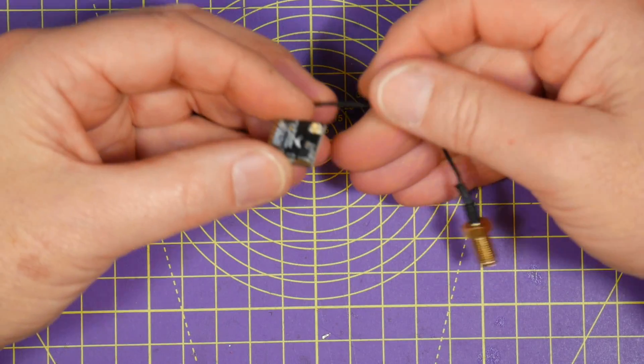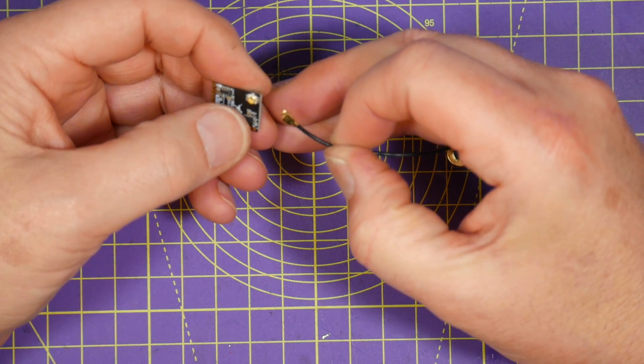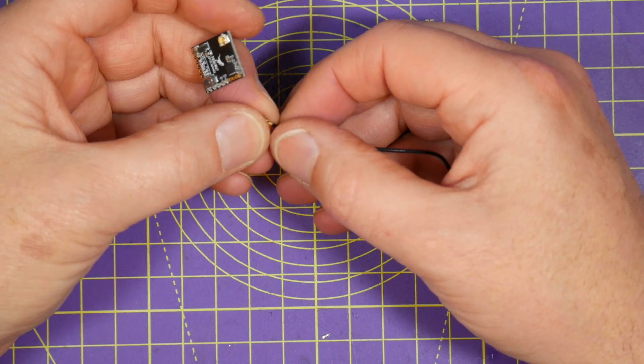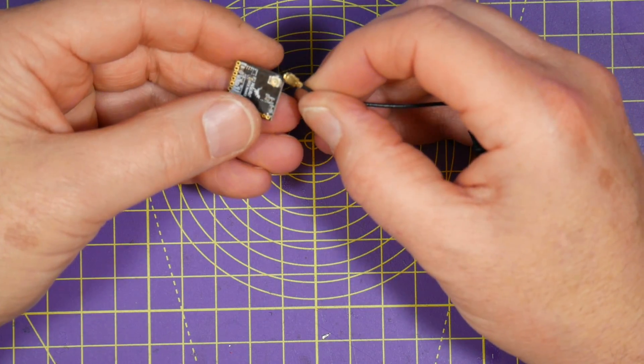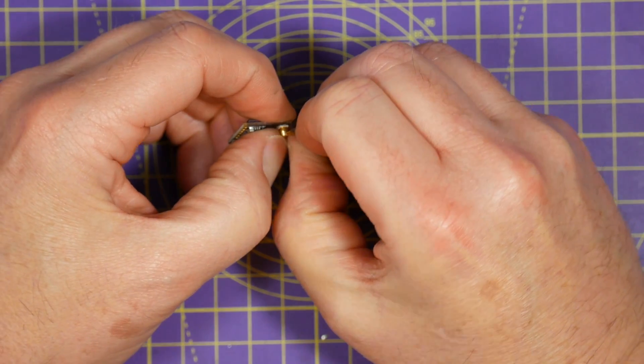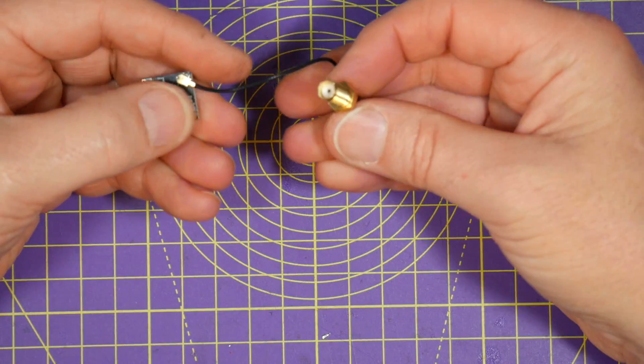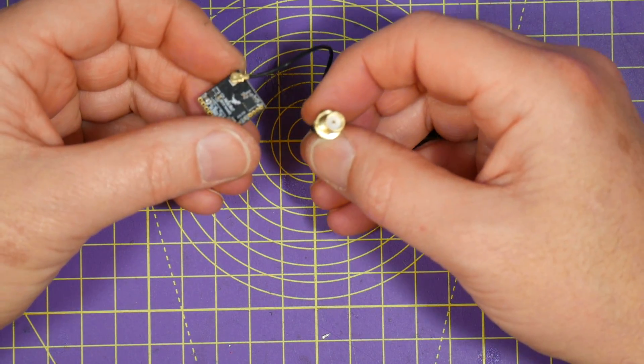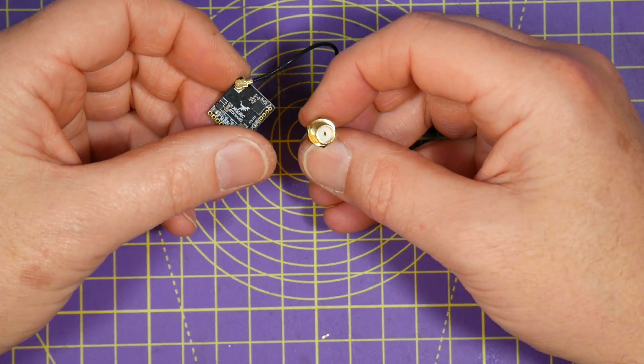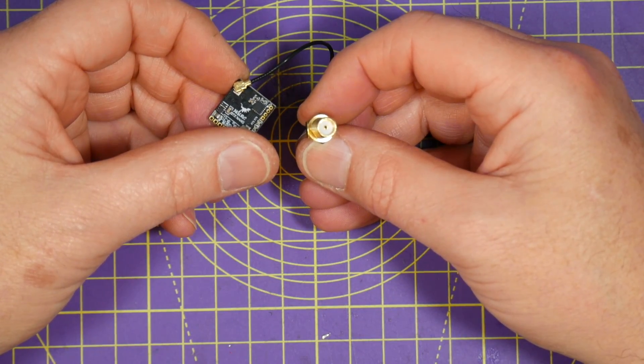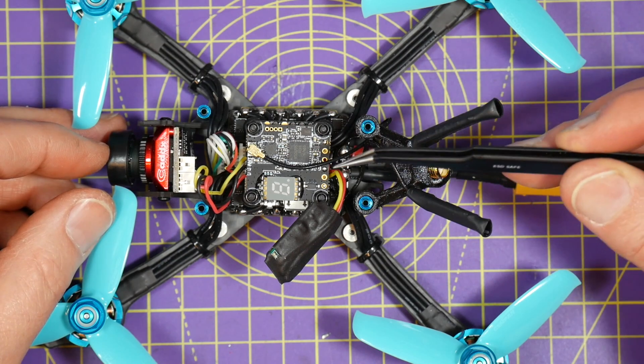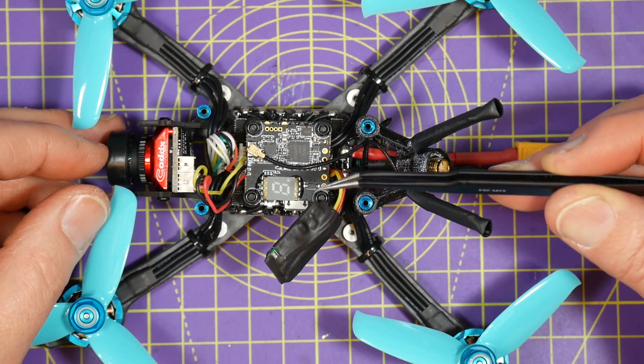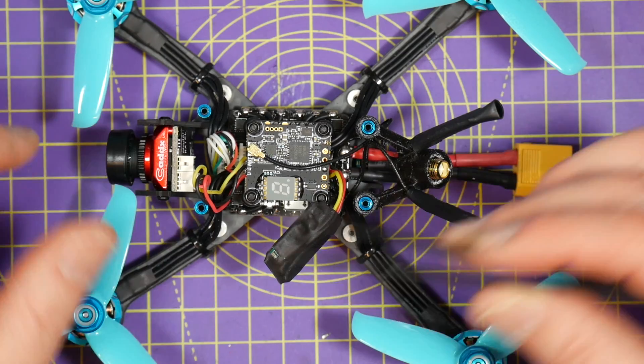One other popular thing with UFL connectors is the SMA pigtail. Some manufacturers include this with the VTX. Rather than the UFL connector going directly to the antenna, it goes to an SMA connector. So I'll plug that in there. We've got an SMA connector on this end. And this allows you to mount the SMA on the quad frame or use a bracket. And you can use whatever SMA antenna you want by just screwing it in. This gives you more options in your build and you're not likely to break the UFL connector with too many insertions. This is fine for lots of builds but not really for lightweight or tiny whoops.